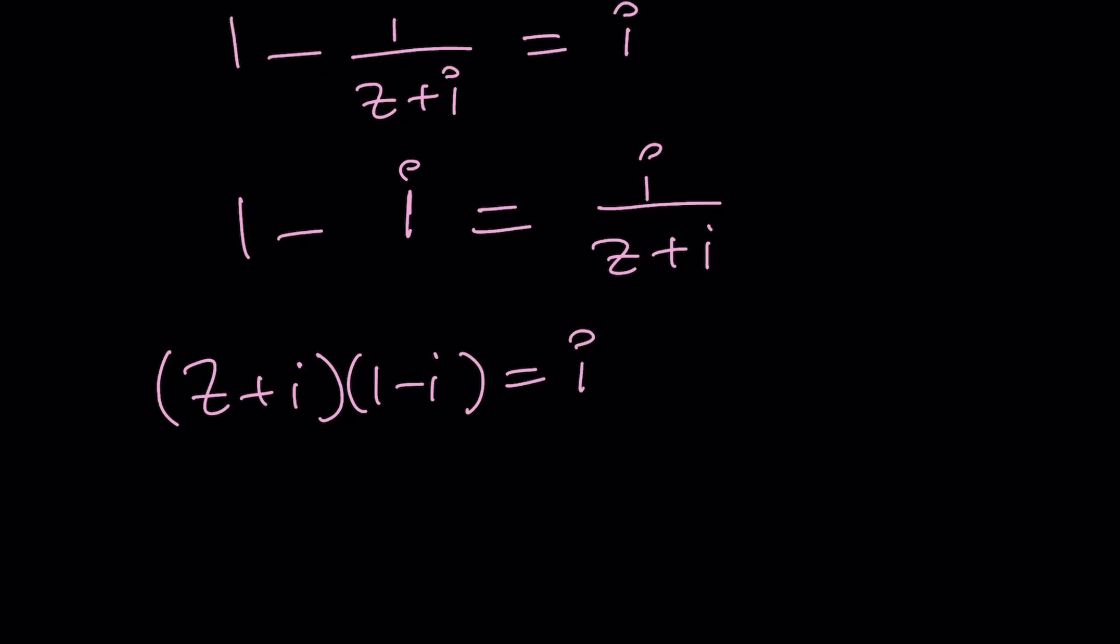By the way, instead of cross multiplying, you could also do crisscross applesauce because you could switch these around. If you have A equals B over C, that also means C equals B over A. Of course, they shouldn't be zero. Some limitations. But you get the idea.